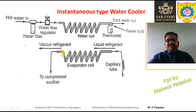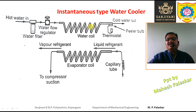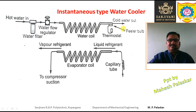The refrigerant then leaves the evaporator coil and enters the compressor through the suction line. The main working principle of the instantaneous type water cooler is that the water coil and the evaporator coil are properly intertwined with each other so as to obtain cold water instantly at the outlet as the water flows through the water coil. That's all about the water cooler. Thank you.